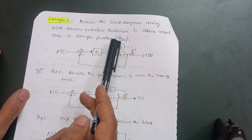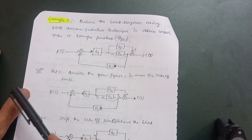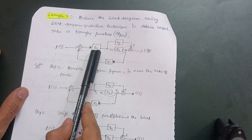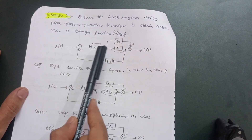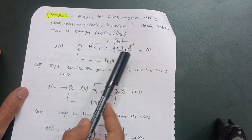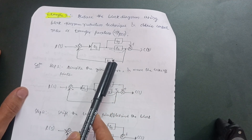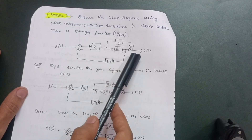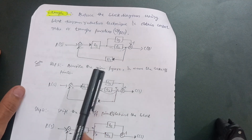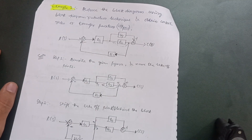The transfer function is denoted by C(s) upon R(s). Let us take this diagram: this is a summing point, this is the forward path G1, then G2, G3, one summing point, and feedback path H1, and this is the output C(s). Now, how to reduce it — there are seven rules.